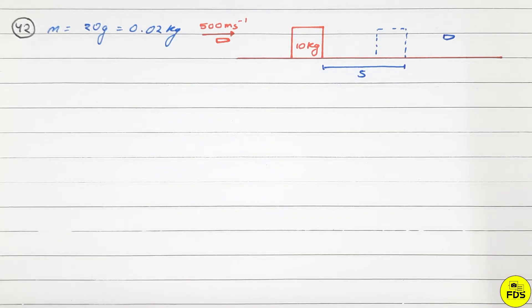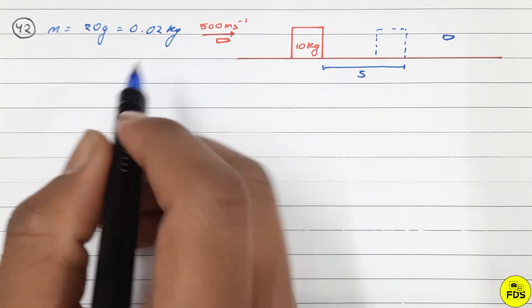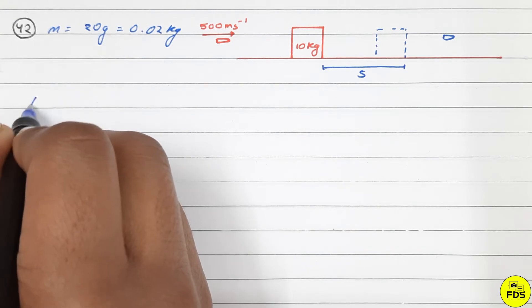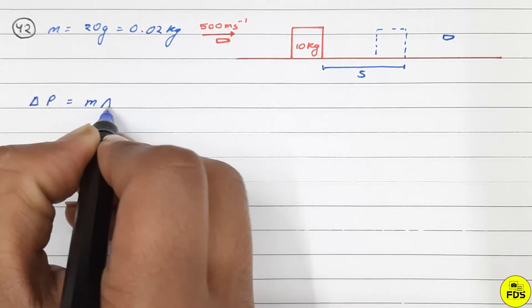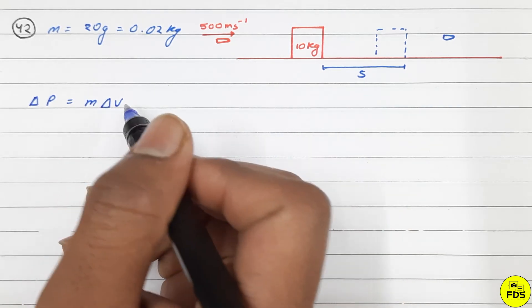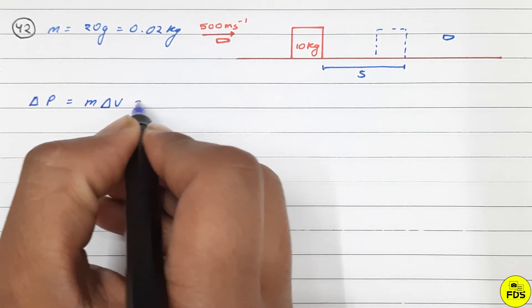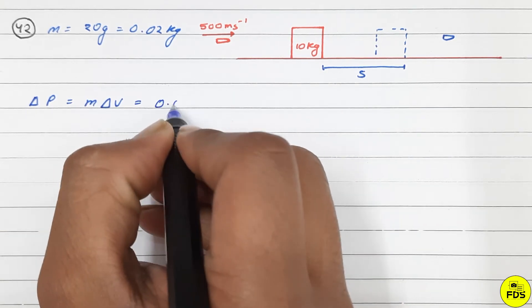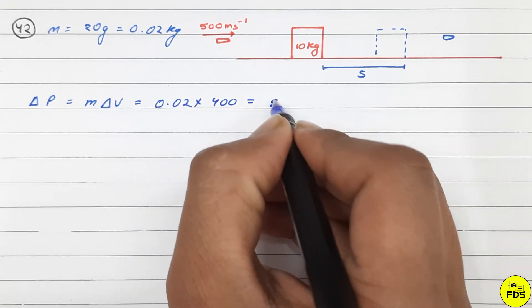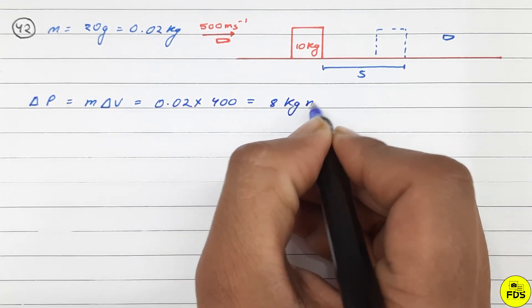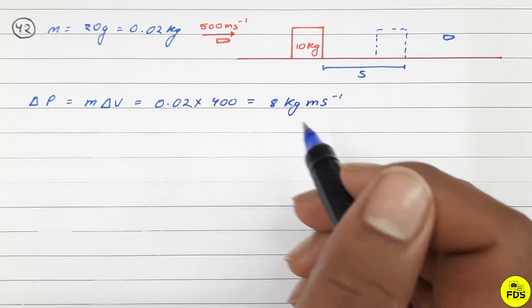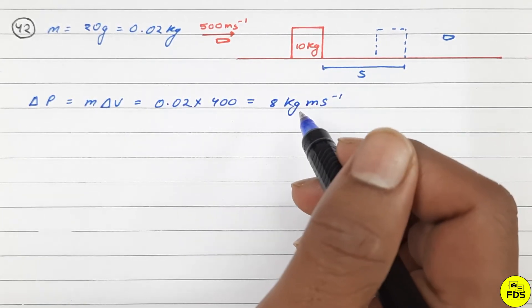Now let's look at the change in momentum of the bullet. Delta p equals m times delta v. The mass is 0.02, and the change in velocity is 400, so this equals 8 kg·m/s. This is the change in momentum of the bullet.